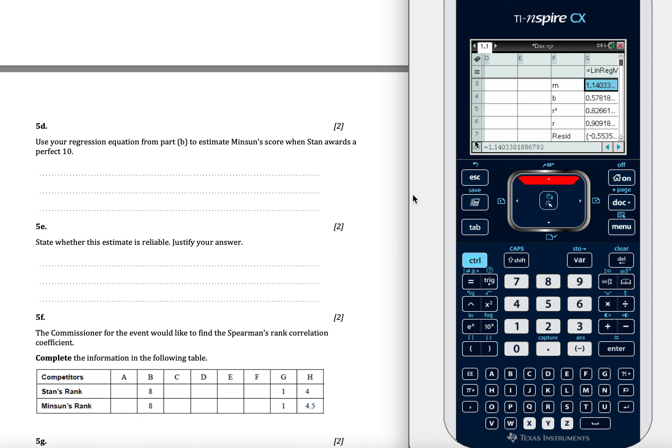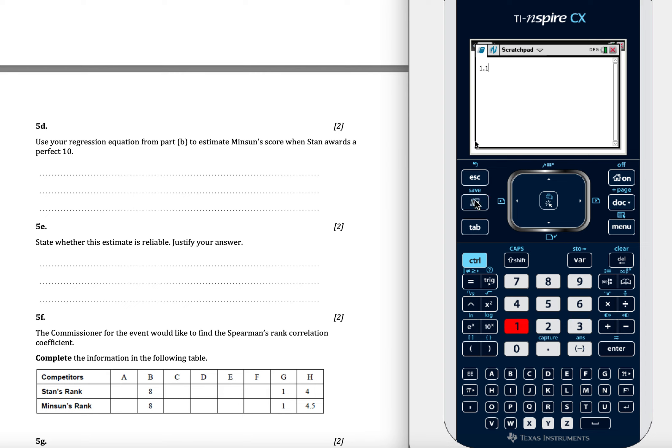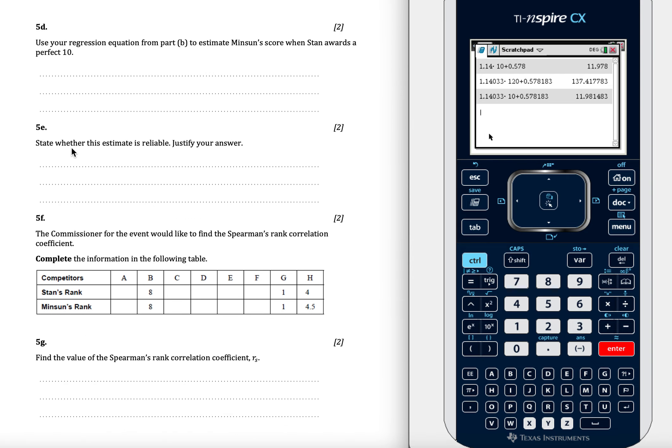Use your regression from the equation, so we can just scratch pad this, so 1.14. We're going to times that by 10, and we're going to add on 0.578. If I add 10, you get 11.978, but if we use the unrounded answers, as would be expected, 0.33 times that by 10, and add on 0.578183. That's times by 120, that's not good, is it? That answer didn't make any sense. Let's take that 2 out and hit enter, and now we get 11.9818. So we're still getting 12.0 to 3 significant figures, so we're happy with that one. State with an answer in the other video. That's not reliable because you can't score greater than 10.